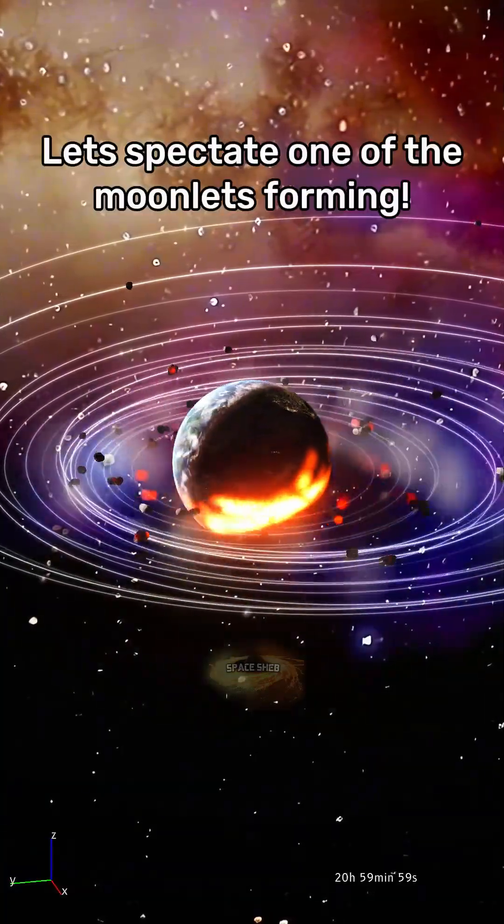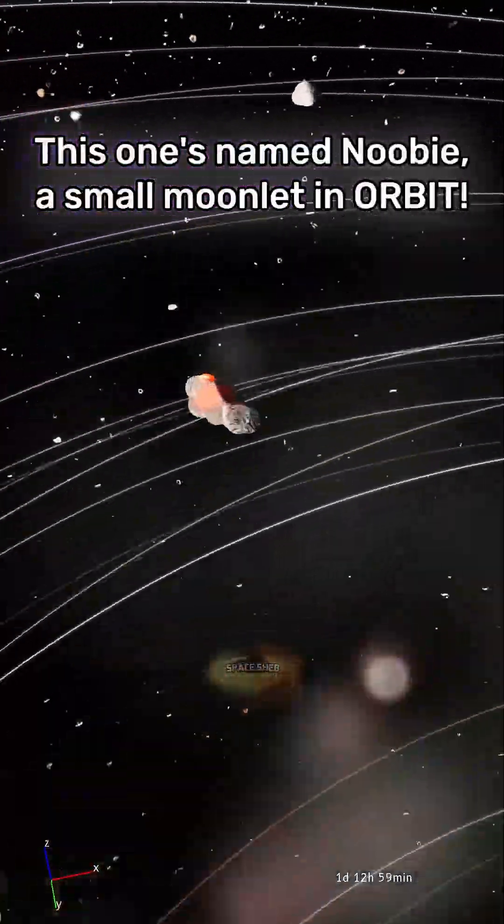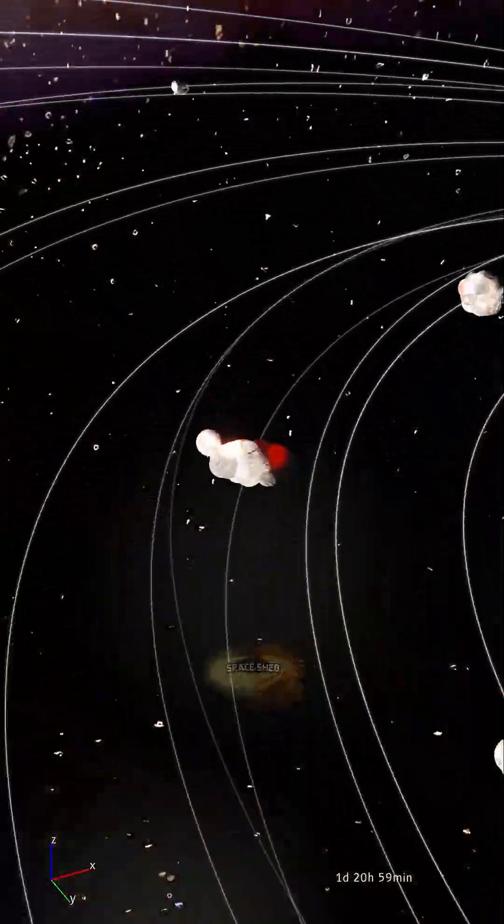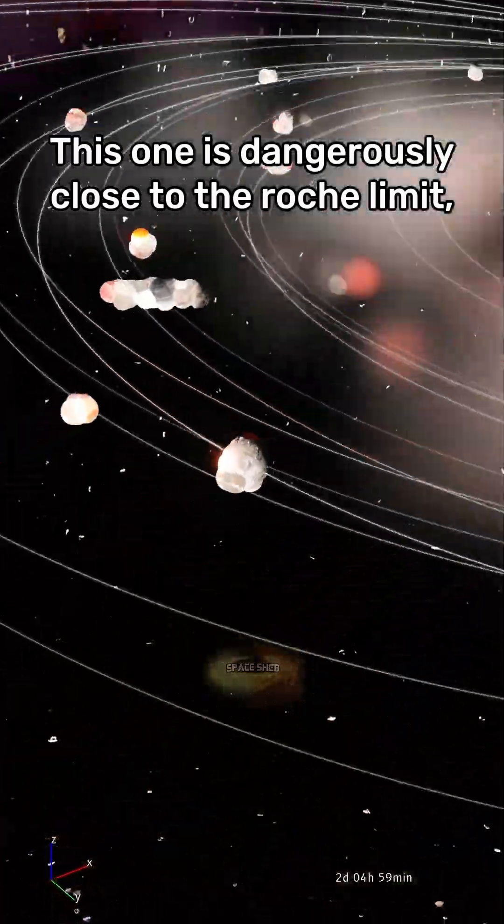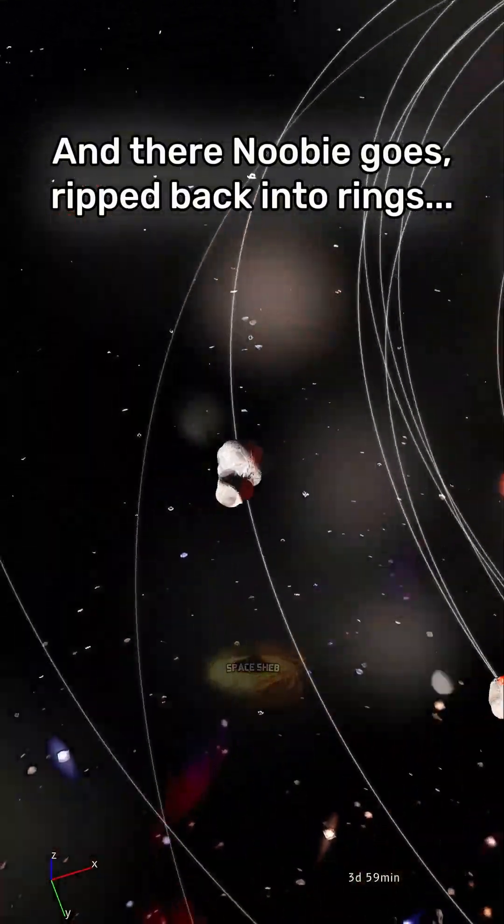Alright, let's pick one of these moonlets. This one's named Newbie, a small moonlet in orbit. This one's dangerously close to the Roche limit. And while he gains mass, he's at risk of ripping apart. And there Newbie goes, ripped apart back into rings.